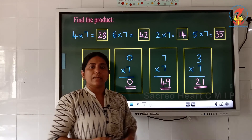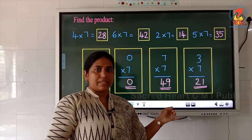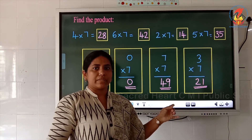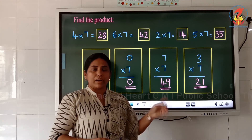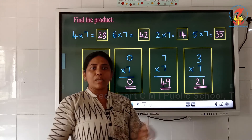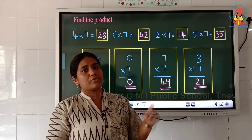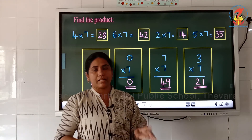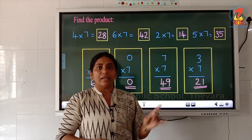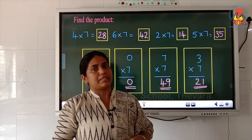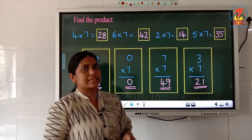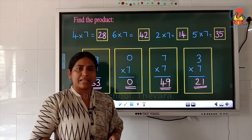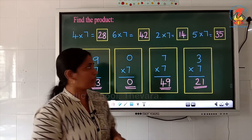So study the table of 7 first, do this worksheet, and you have to revise all the tables from 1 to 7 each and every day — read it and practice. Ok children, that is all for today's class. We will see in the next class. Thank you.